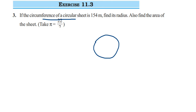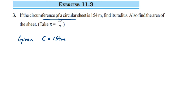Let's start solving. What is given: circumference C = 154 meters. What we have to find: the radius, and then using the radius, the area of the circular sheet. Since we are given only the circumference, we use the circumference formula. The circumference of a circle is C = 2πr.